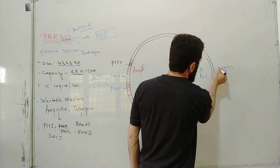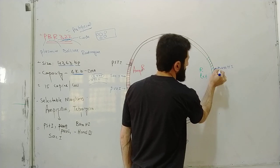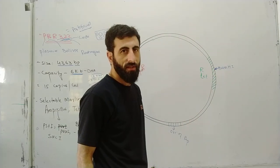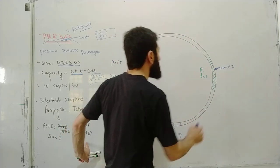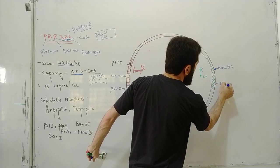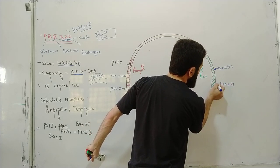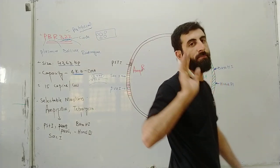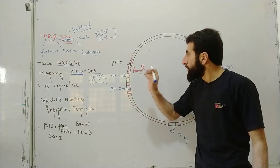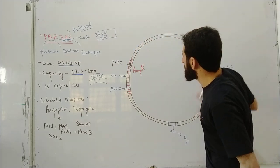Different restriction enzymes cut at different sites. For example, BamH1 cuts at one site, HindIII cuts at another site, and PstI cuts within the ampicillin resistance gene on the PBR322 plasmid.